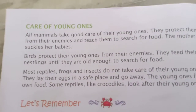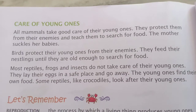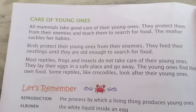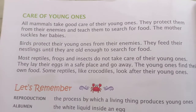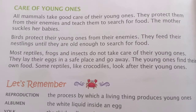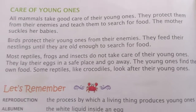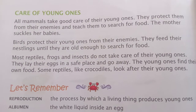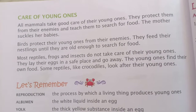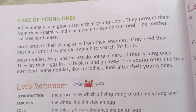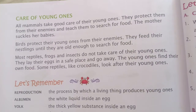The next portion is care of young ones. All mammals take good care of their young ones. They protect them from enemies and teach them to search for food. For example, a mother cat teaches her kittens many activities, like how to catch insects and worms. The mother also suckles and looks after her babies.